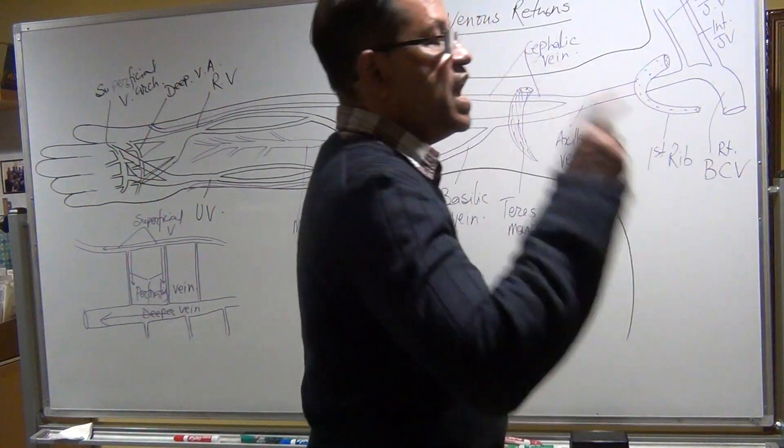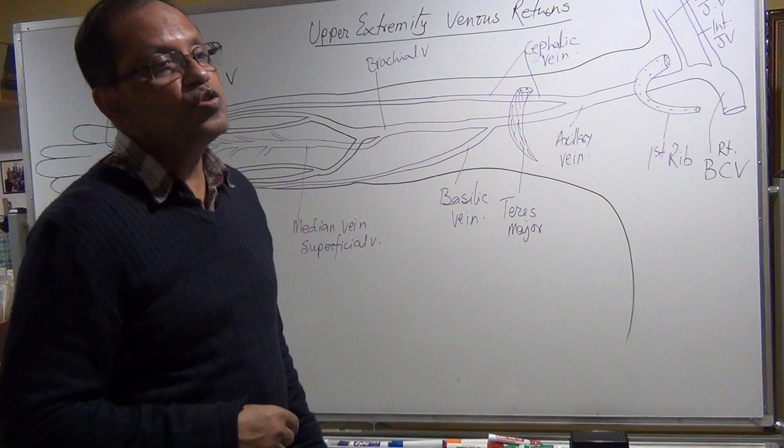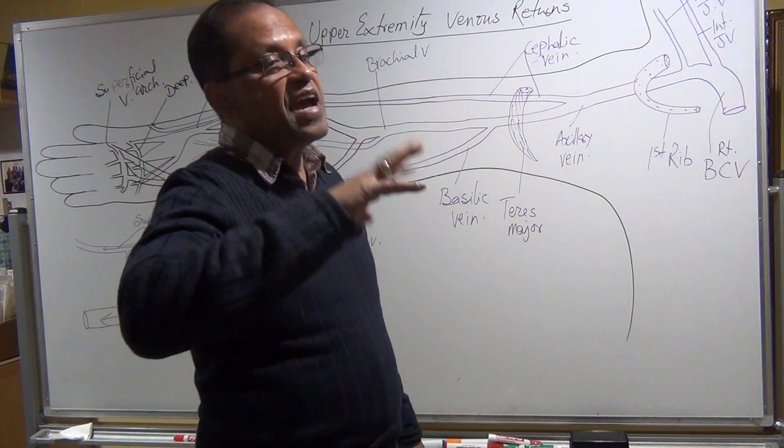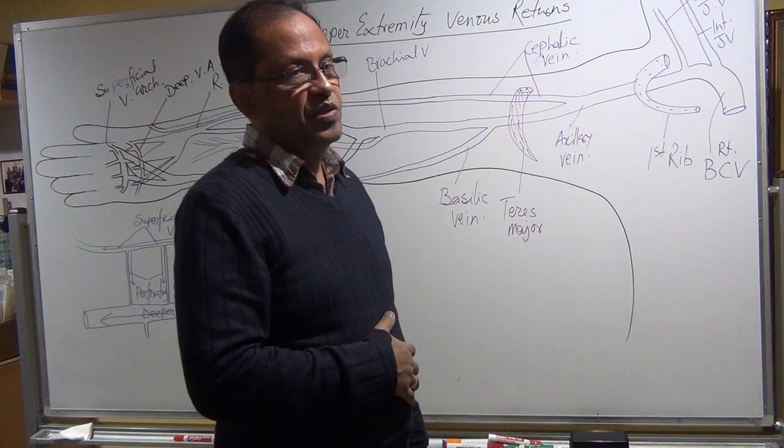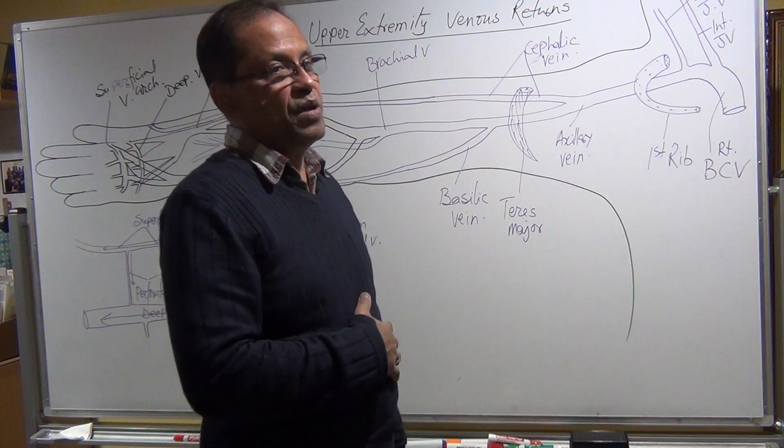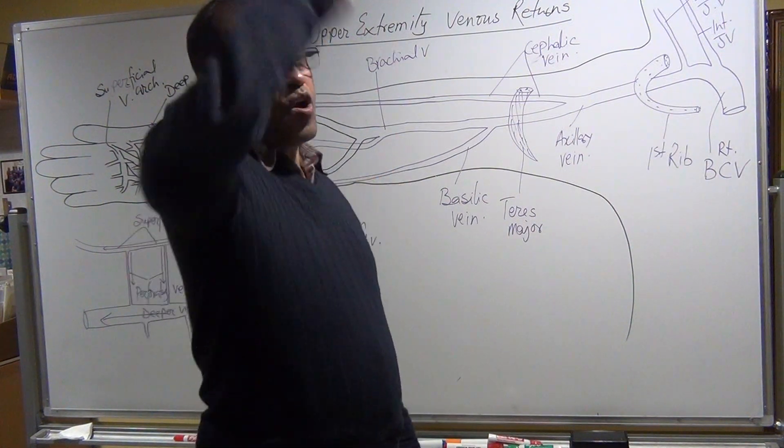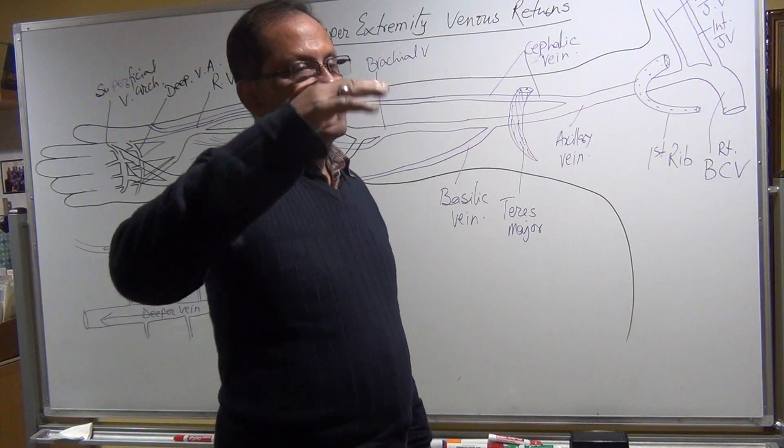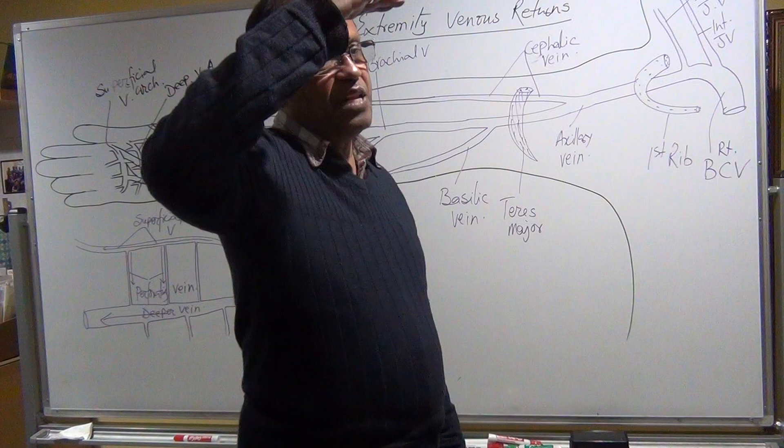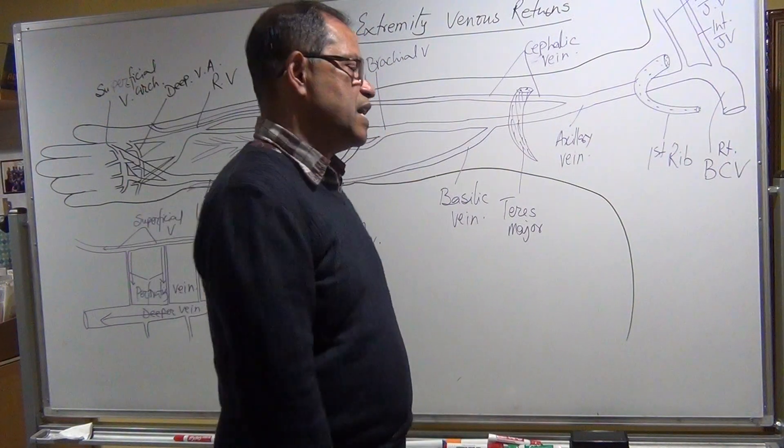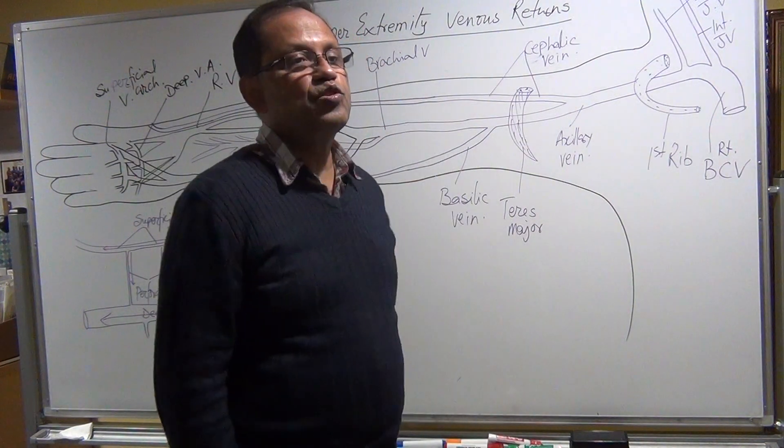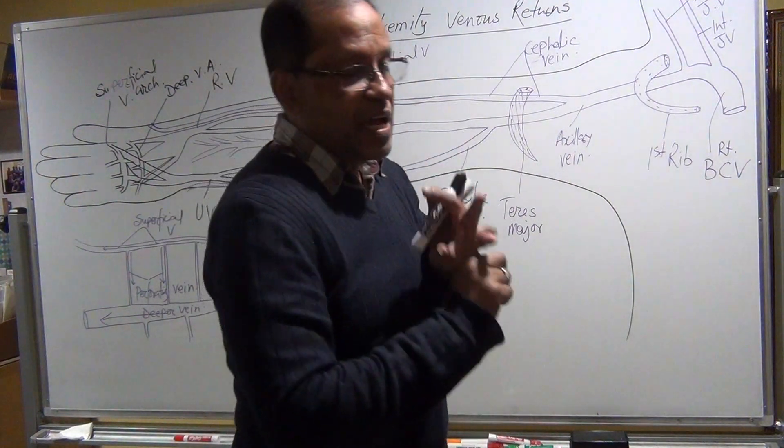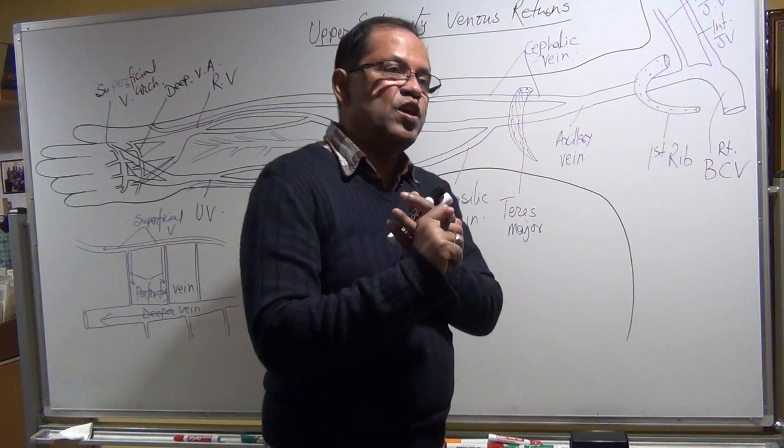close to the right atrium. Any veins close to the right atrium have bi-directional waves. Bi-directional waves means they go forward and backward. You'll see the wave goes above the baseline and below the baseline.